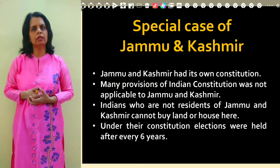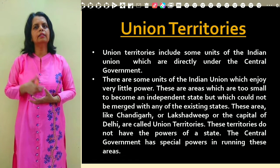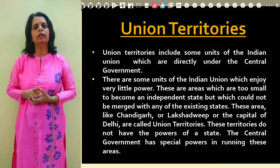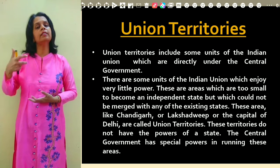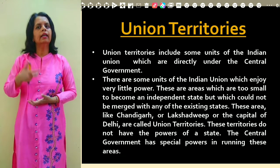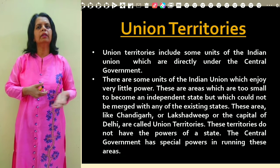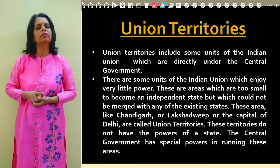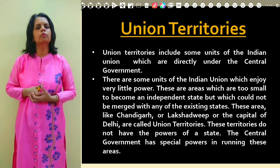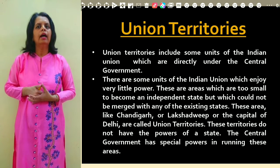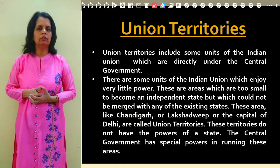There are also some units of the Indian union which enjoy very little power - those too small to be included in the Indian union as states. These are categorized as union territories. The central government's rule is applicable to these territories. They were so small that they could not be merged with any existing states. Examples include Chandigarh, Delhi, and Lakshadweep - all too small, and hence they come in the category of union territories, where the central government has special powers.